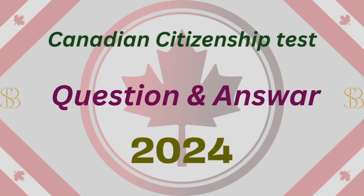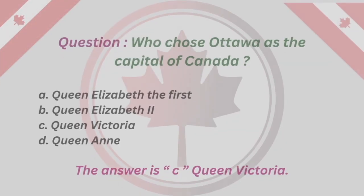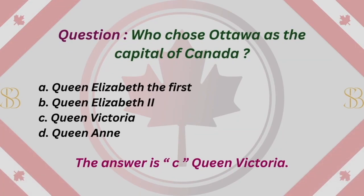Canadian Citizenship Test Question and Answer 2024. Question: Who chose Ottawa as the capital of Canada? A. Queen Elizabeth I. B. Queen Elizabeth II. C. Queen Victoria. D. Queen Anne. The answer is C. Queen Victoria.